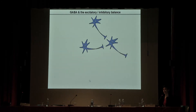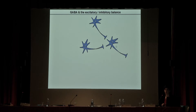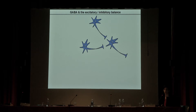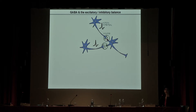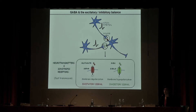The topic of this talk is the crosstalk between protocadherin-19 and GABAergic signaling. Neurons communicate by using action potentials and spikes — basically electrical signals — and these signals, in order to cross the extracellular space between neurons, need to be converted into chemical signals, which are neurotransmitters.